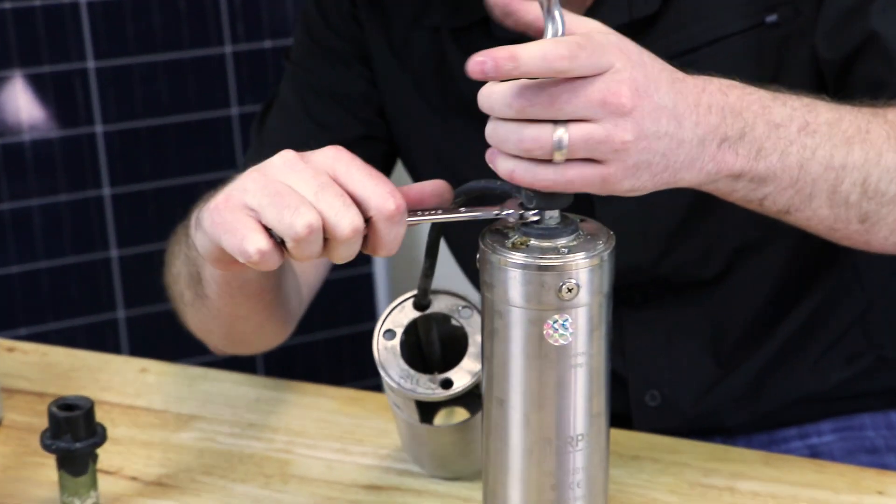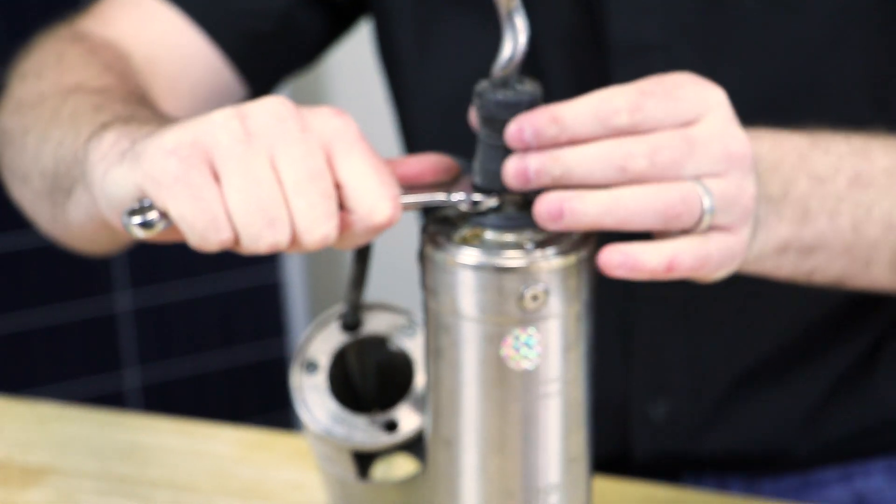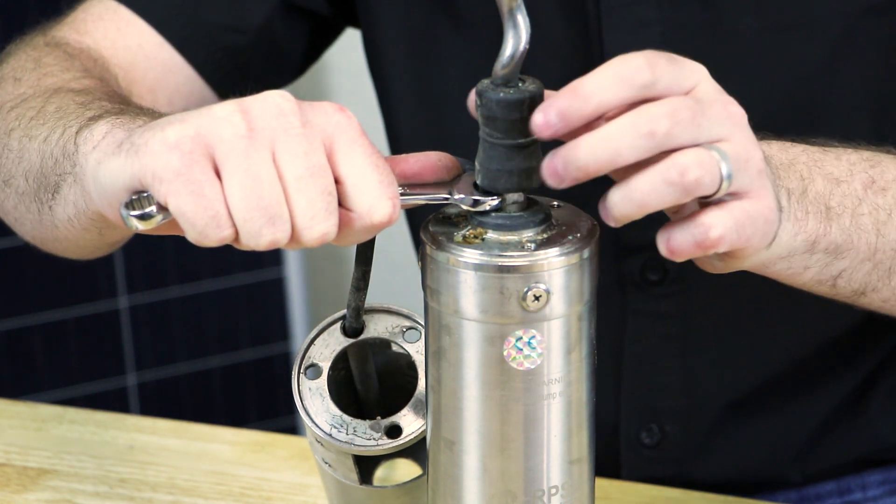On the side there's a place to put a wrench in order to unscrew the mechanism. It's reverse thread. So if you think about unscrewing a standard bolt, go the other way.